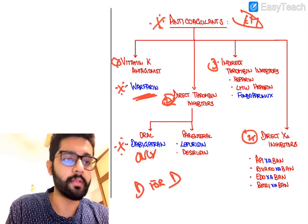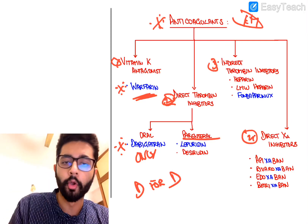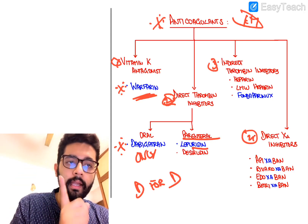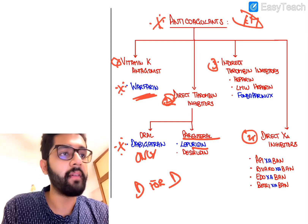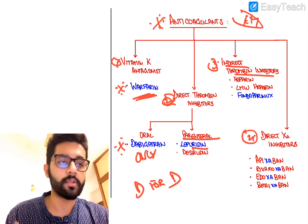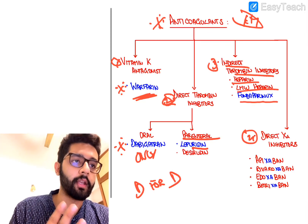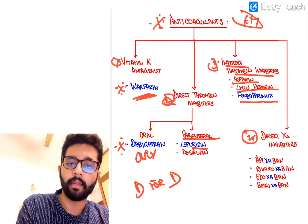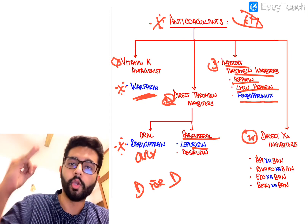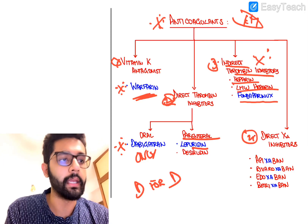For parenteral direct thrombin inhibitors, lepirudin is the important one — you can also know desirudin. For indirect thrombin inhibitors, the most famous are heparin, low molecular weight heparins, and fondaparinux. Among low molecular weight heparins, enoxaparin is the important one. So heparin, LMWHs, and fondaparinux are the important indirect thrombin inhibitors.